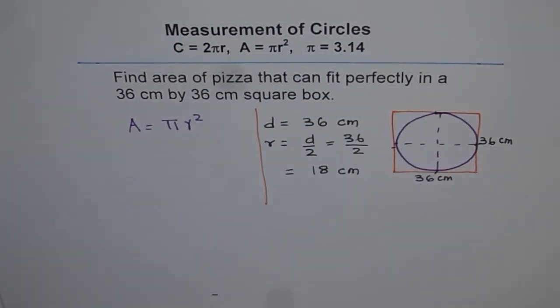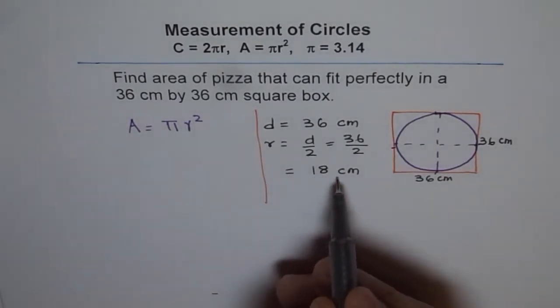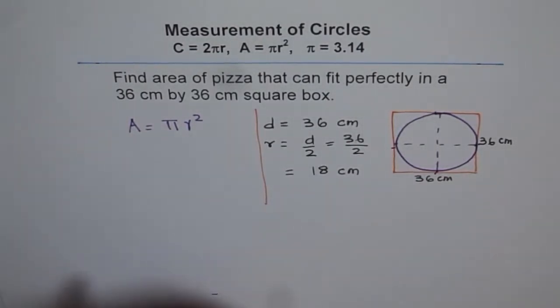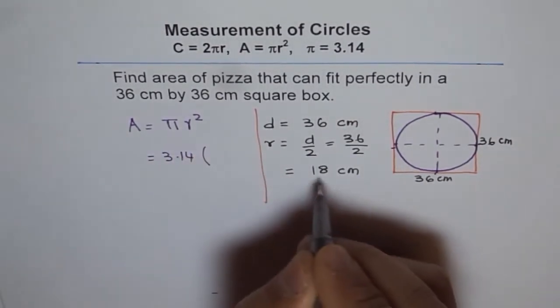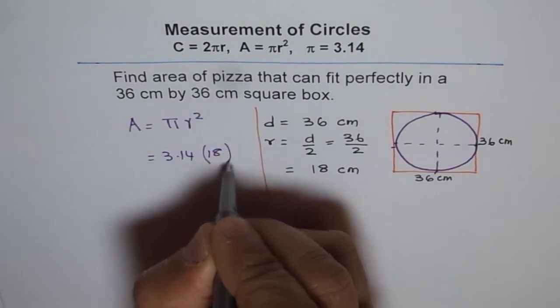Now, once we know that radius is 18, we can find the area. Area is pi which is 3.14 times 18 which is the radius square.